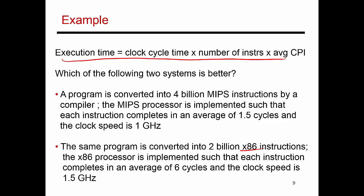This program, when compiled for the MIPS architecture, requires four billion instructions. And the processor is implemented so that, on average, every instruction takes 1.5 cycles. So the CPI is 1.5. And I'm able to run the circuits fast enough that I have a clock speed of one gigahertz.